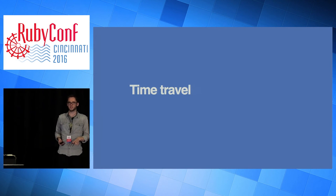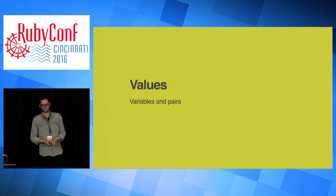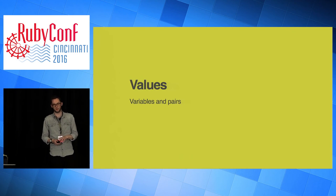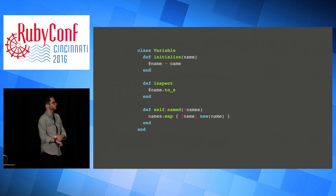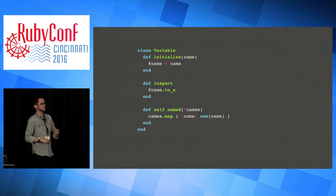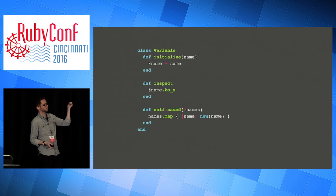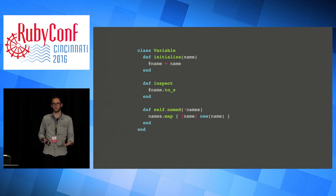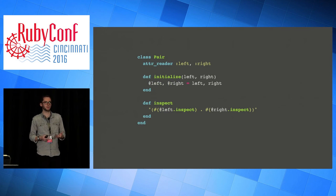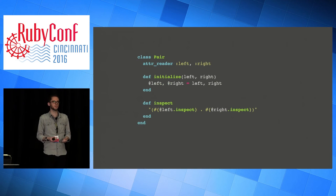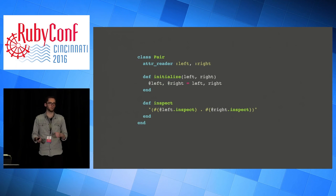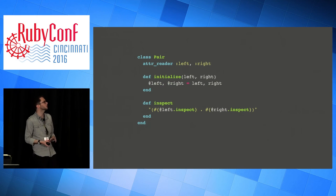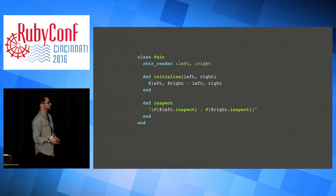There are very few moving parts to this language so we can get it done quite quickly. There are two kinds of values: variables and pairs. A variable is just something that has a name - it takes a name and keeps hold of it. The only point of this is to have variables as values that we can talk about as actual things. And then you have pairs. A pair is just something with a left field and a right field - the simplest data structure you can make. You can build any other data structure out of this by chaining them together into lists or making trees. This is the minimal possible set of values to support what we want to do.